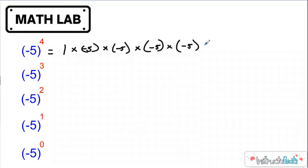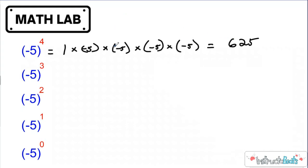I'll only apologize once for my handwriting — it will be bad the whole video. So here we have one times negative five times negative five times negative five times negative five. I put that in parentheses, and that's going to be really important. We just need to understand our negative multiplication rules. I know that five to the fourth power would be 625. So the question is: should this be negative 625 or positive 625? Well, two negatives make a positive — so two negative fives make a positive, and two more negative fives make a positive. A positive times a positive gives a positive, so negative five to the fourth power is 625.